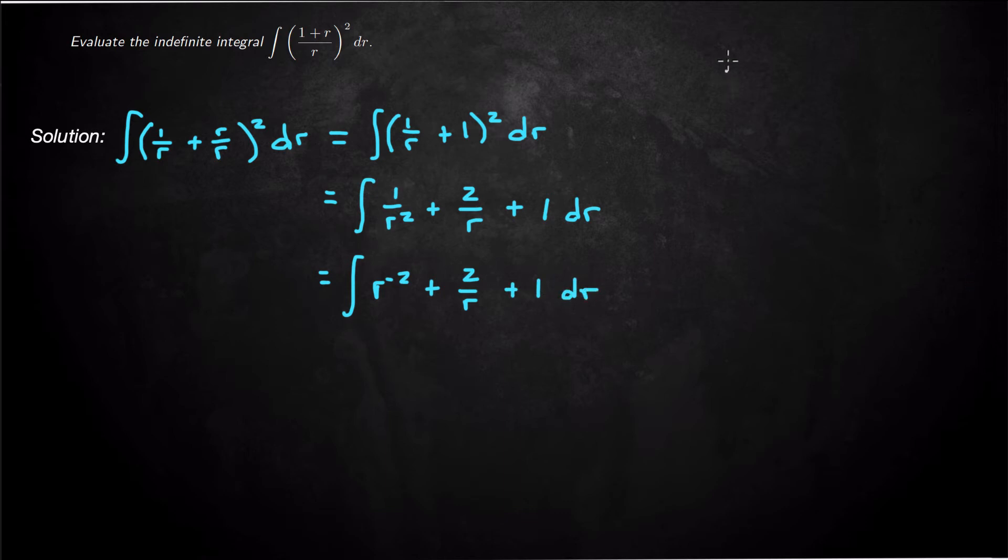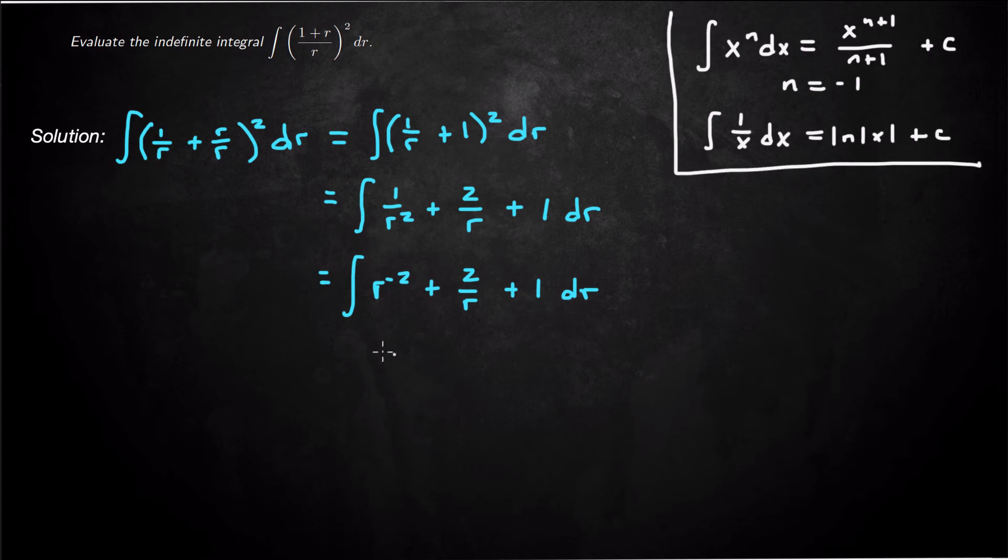So we need to recall the power law. Power law says integral of x to the n dx equals x to the n plus 1 over n plus 1 plus c, if n is not equal to negative 1. And basically if n equals negative 1, that's integral 1 over x dx, which is natural log absolute value of x plus c. So we need to keep those two in mind when we're doing these first two integrals.